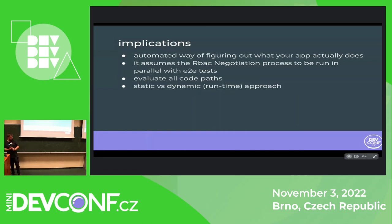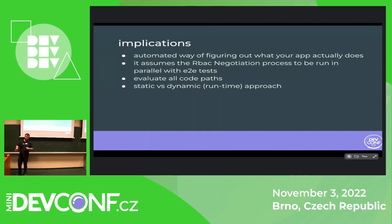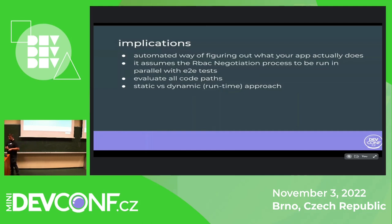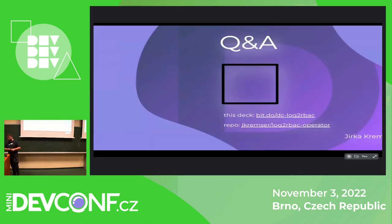I also have an idea of static versus dynamic analysis. What I do is basically dynamic analysis — I run the application and do something with it. But it can also be done by just exploring the code, building the ASTs, and trying to figure out what the application does. This way it would be language-dependent — you'd have to do it for Golang, Java, Python — but this log-to-RBAC approach works for all of them, for free. Yeah, that's it. Thank you, and there are links for the deck and repo.